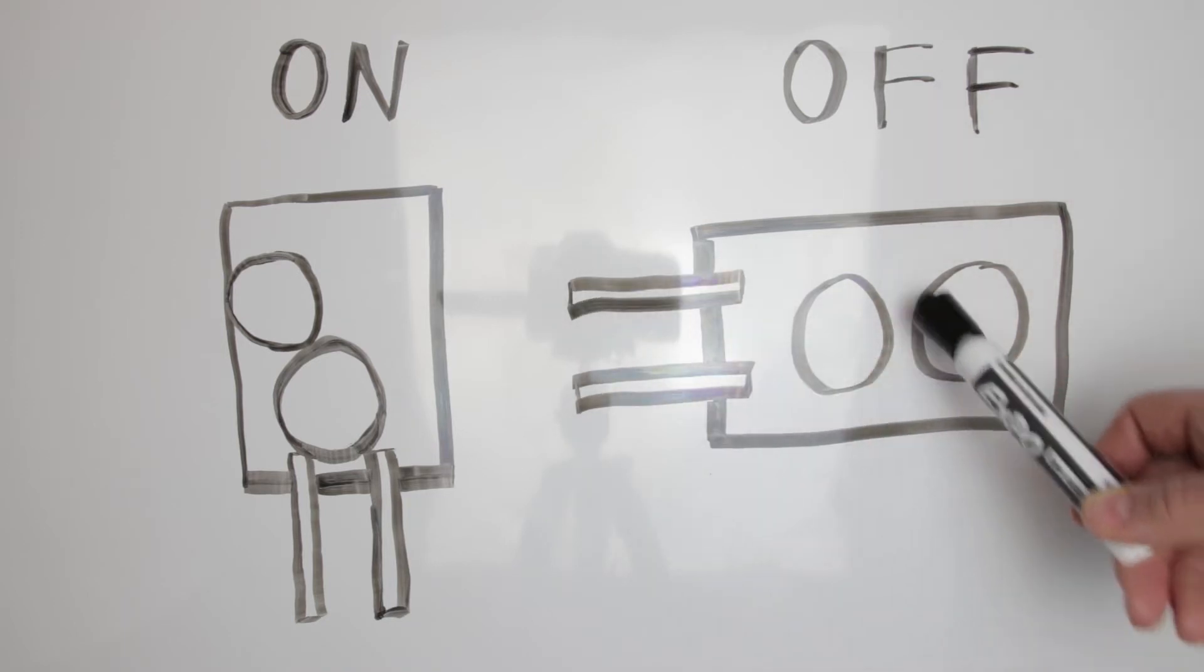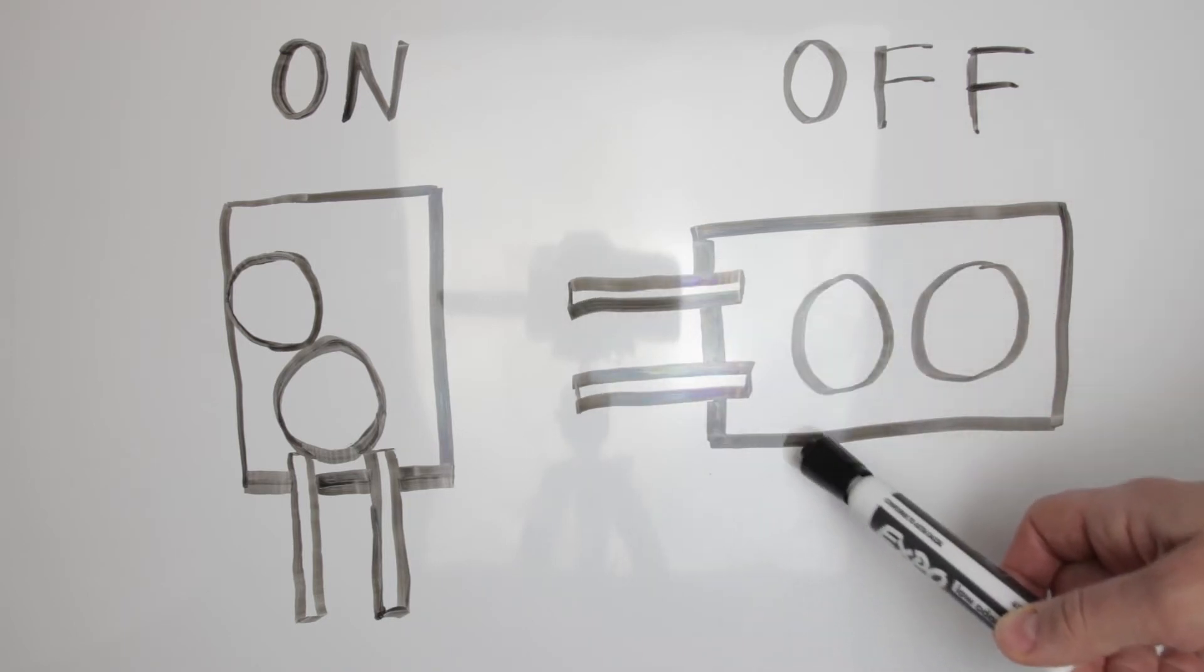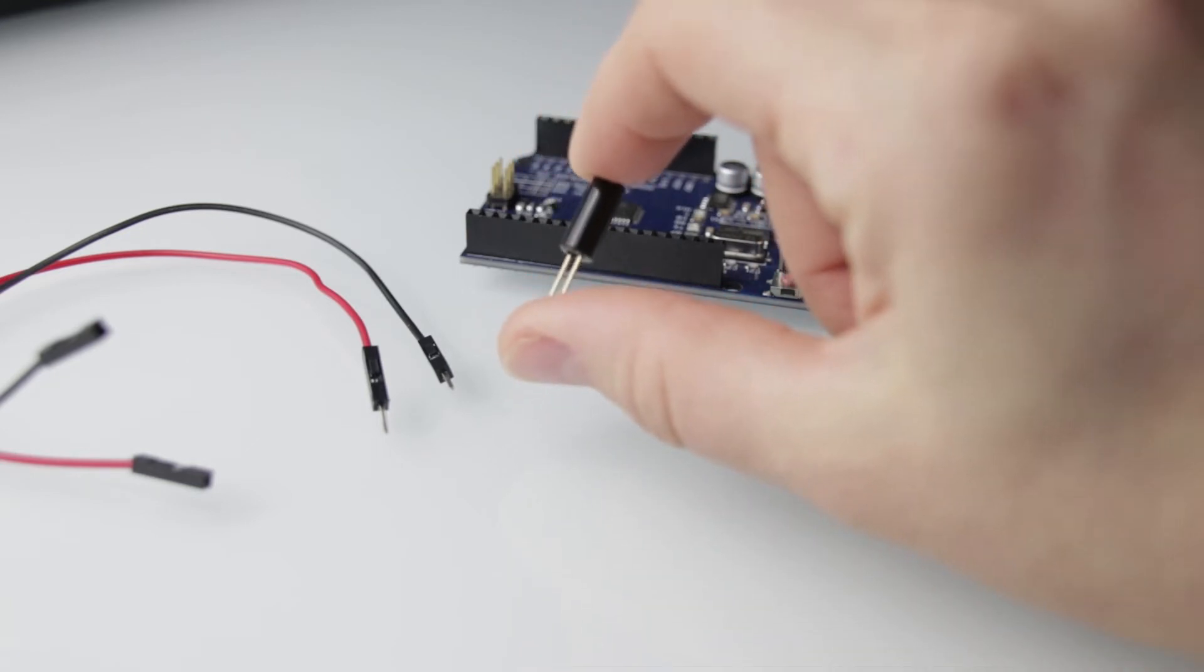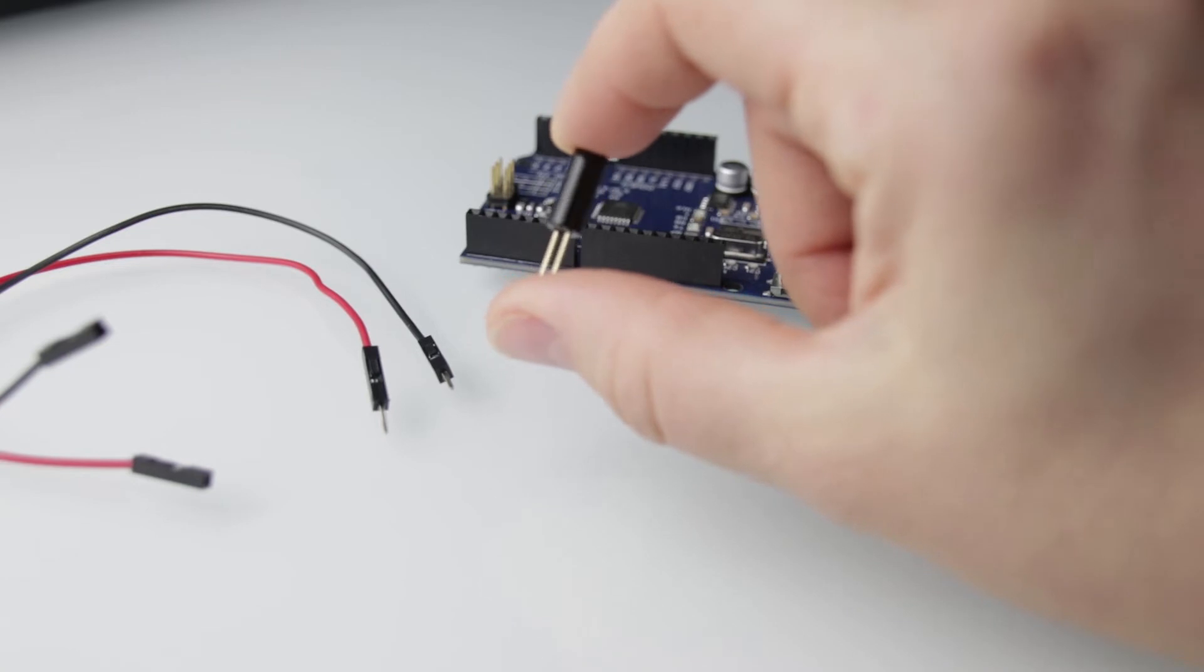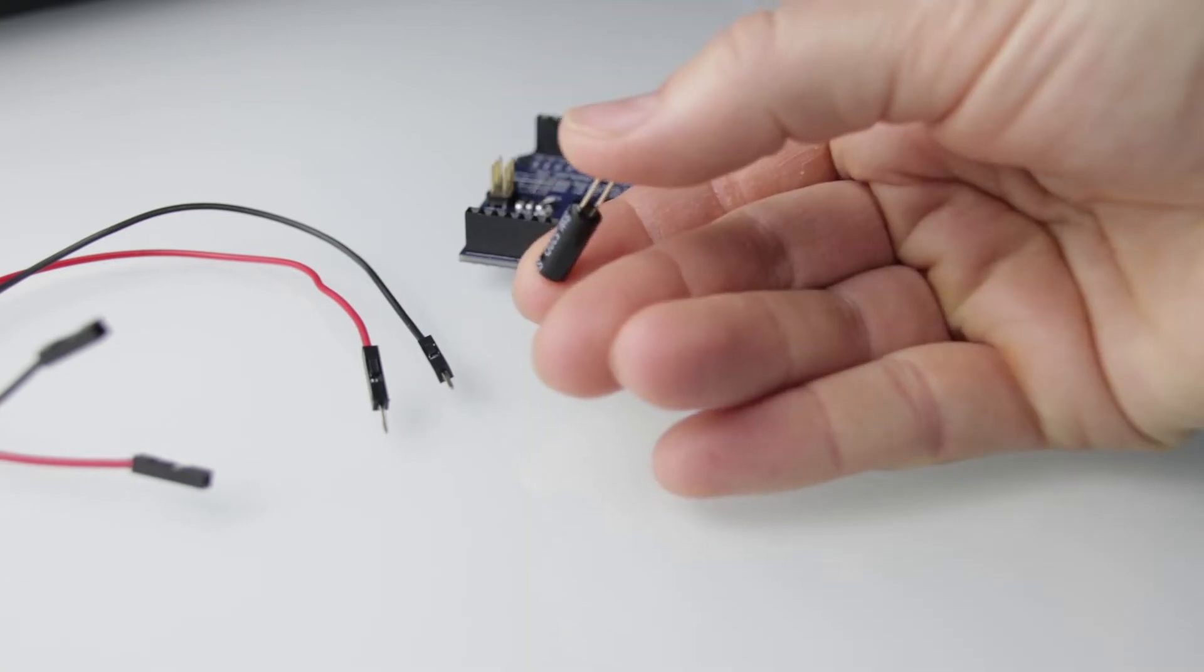The switch would be in the off position in the horizontal position. Tilt angle range is the range of desired linear output measured in degrees. For this switch, the sensitivity range is 30 degrees.